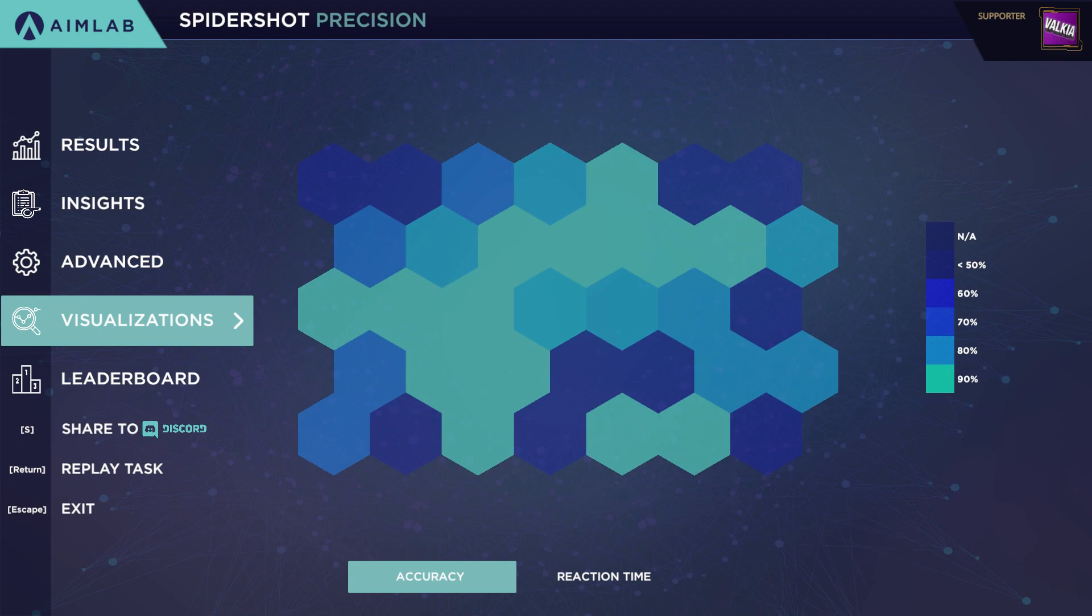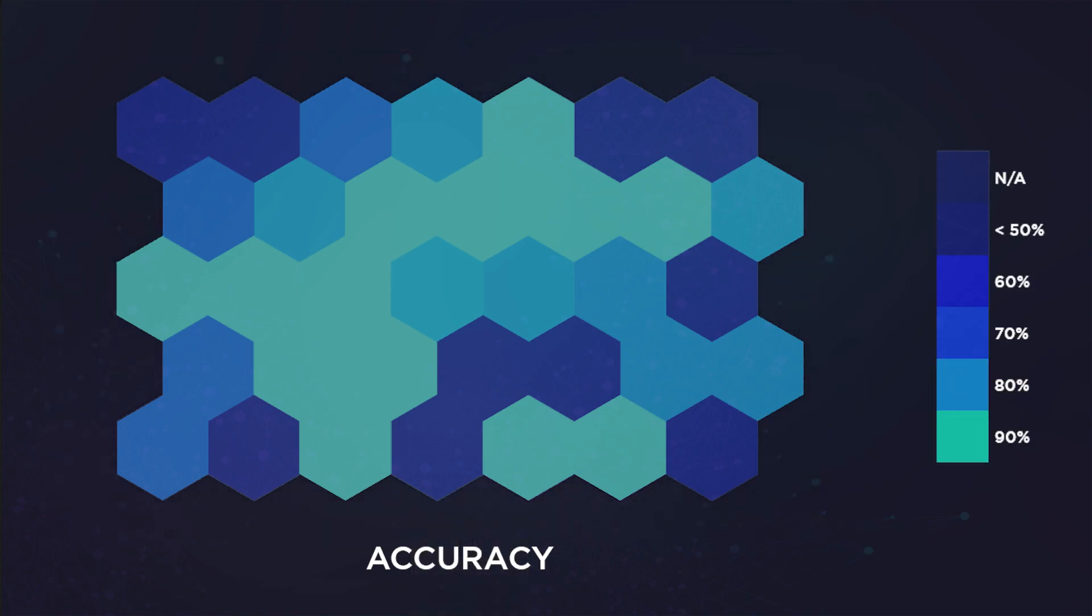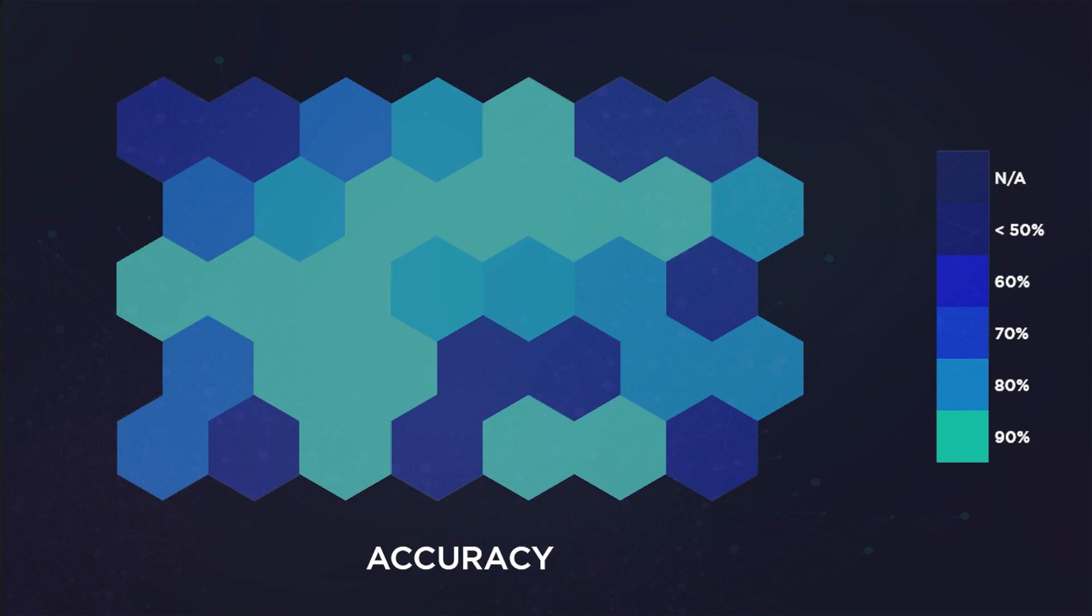I love the visualization tab. Imagine the hexagons on the screen represent your screen on your monitor. Each shape has a color which corresponds with the chart on the right side. In this instance, we're looking at accuracy, and the light green color is 90% plus accuracy while the dark blue is less than 50% accuracy. At a quick glance, you can see which areas of the screen you're great at hitting and which areas you need to work on. I can tell there are more blue hexagons on the right side of the screen, which means I have work to do. This was also reflected again back in the insights.